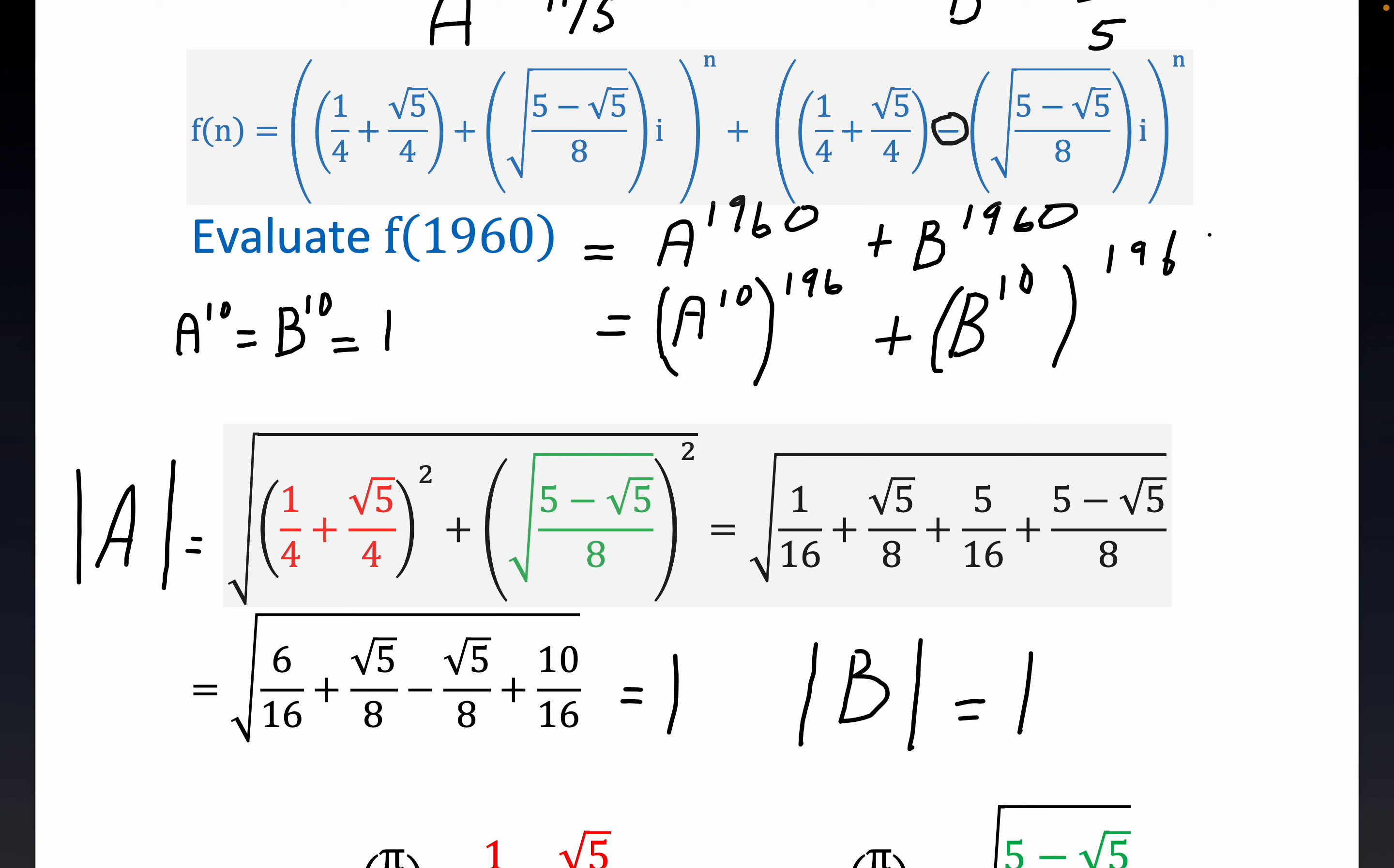And so guess what? This whole thing craps out into, since A and B to the 10th are equal to 1, this just sums up to 2. And that completes the problem, folks. I wish I could figure out a way to keep everything on the same screen. I think it's just kind of impossible, really. I want to make it right big enough to where you can see. But anyway, the answer to the question is 2.